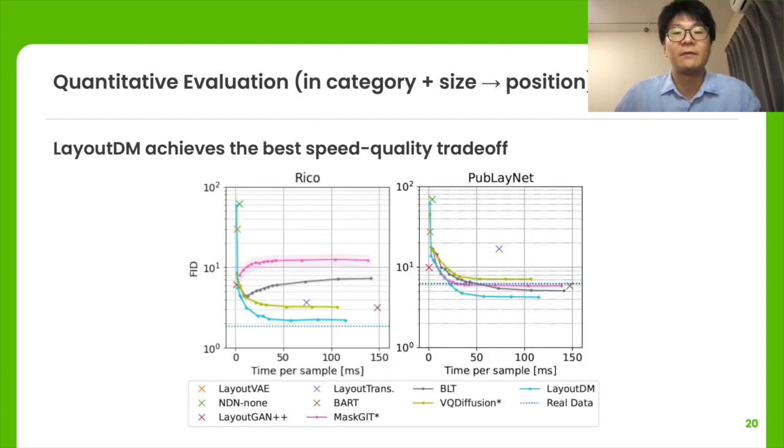Since our model can achieve fast generation at the sacrifice of quality thanks to the property of diffusion models, we compare the models in terms of speed and quality in this graph. If the model achieves a smaller FID and shorter generation time, it means that the model is better. As we can see, LayoutDM achieves the best speed-quality trade-off in most of the cases. For more quantitative evaluation, please refer to the manuscript.